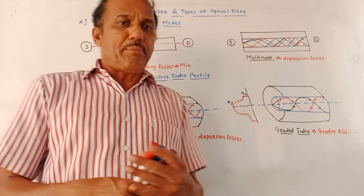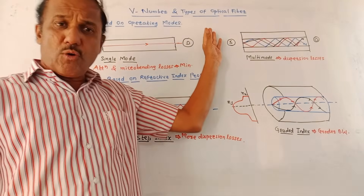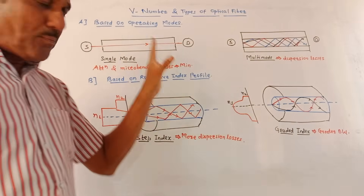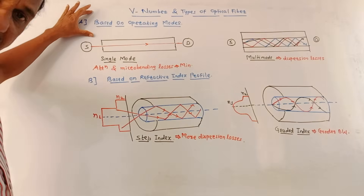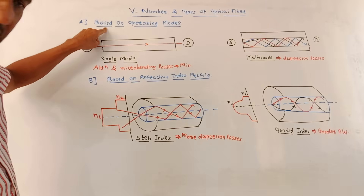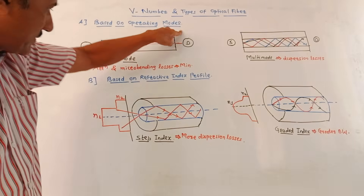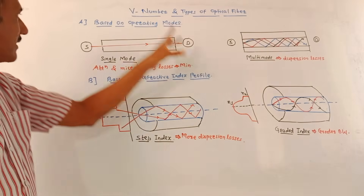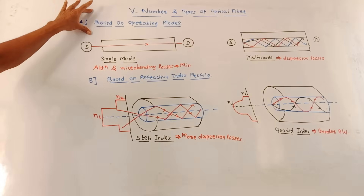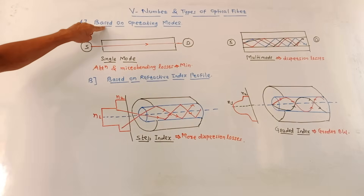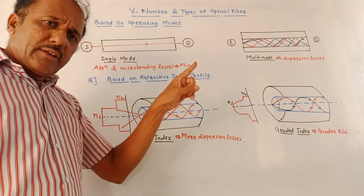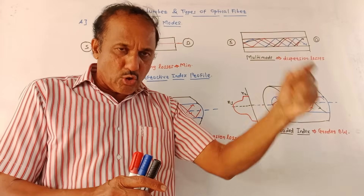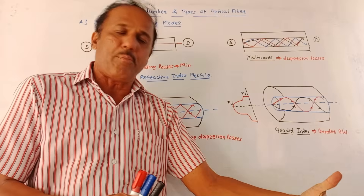Now let us discuss an important part — the classification of optical fiber cables. Broadly, there are two major categories: Part A, classification based on operating modes, and Part B, classification based on refractive index profile. We will first discuss the types based on operating modes. In general, there are two operating modes: single mode and multimode.